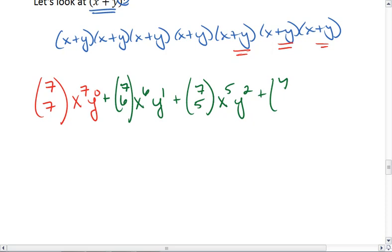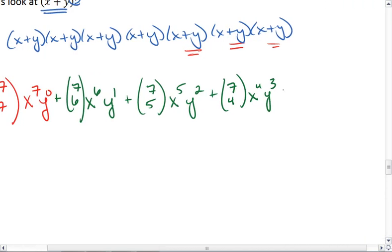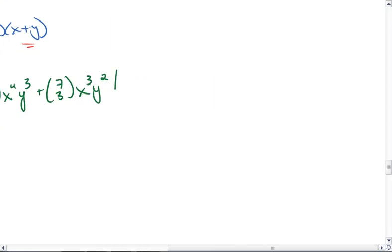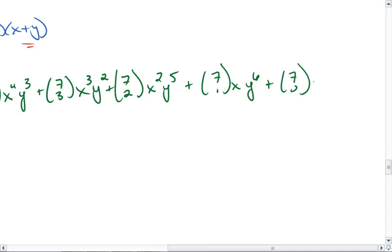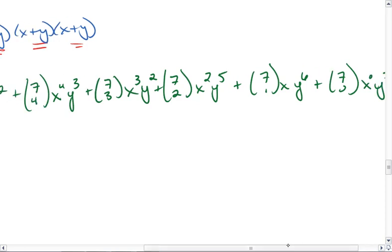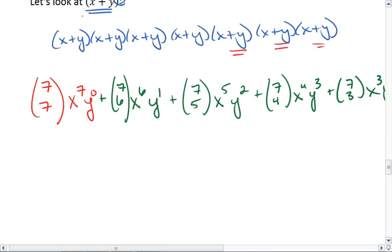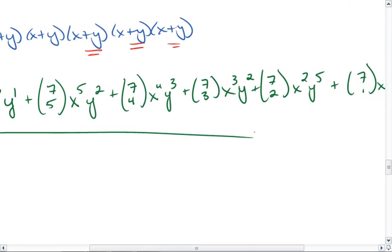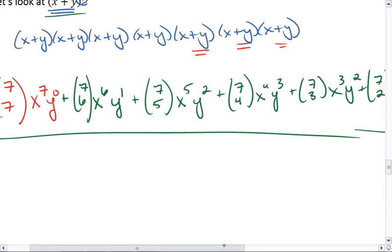I could choose 4 x's out of the possible 7, which will leave me with 3 y's. I could choose 3 x's, which leaves me with 2 y's. I could choose 2 x's and 5 y's, 1 x and 6 y's, or 0 x's and 7 y's. So this is a different way to write out the expansion of x plus y to the 7th, and much easier than actually multiplying x plus y together 7 times.